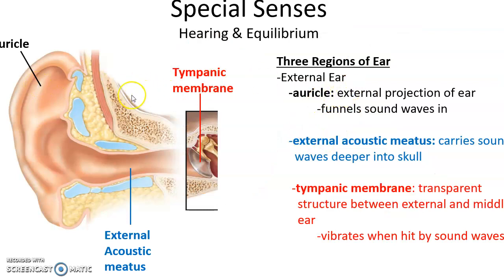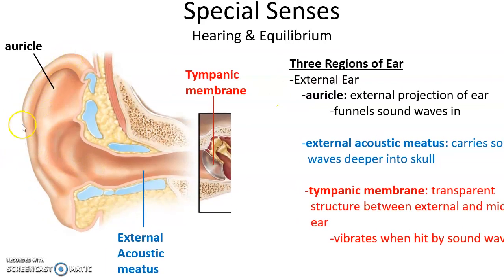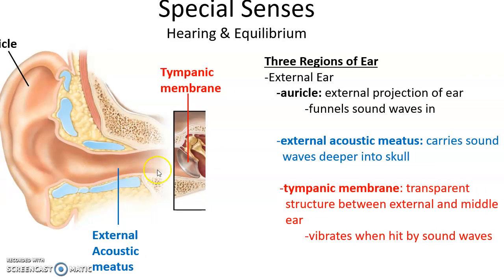Moving on to hearing and equilibrium — both found inside the temporal bone in the inner structure of the ear. There are three big regions of the ear. The external ear includes the outer fleshy part you can see, called the auricle. The canal is called the external acoustic meatus, and at the very end of the canal is the tympanic membrane — the eardrum. The auricle acts as a funnel, directing sound waves into the external acoustic meatus, which carries them down to the tympanic membrane, causing it to vibrate.